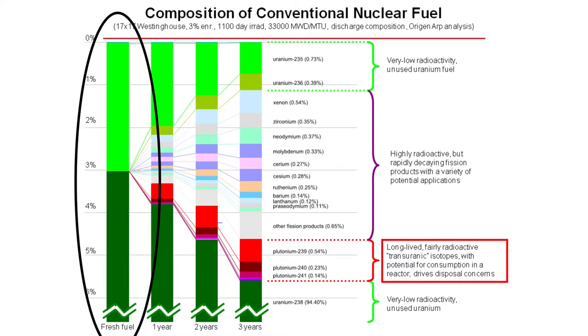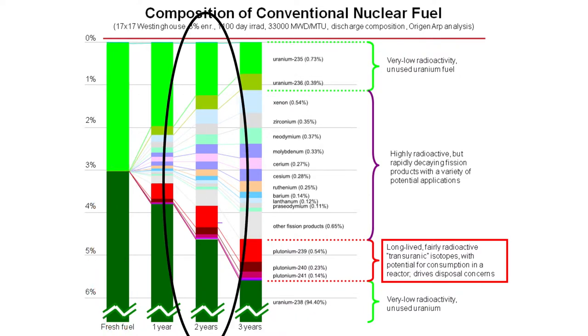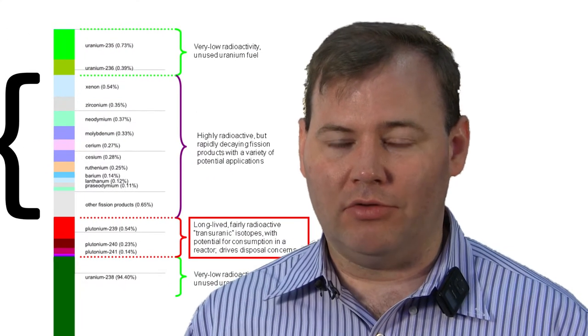When we first load nuclear fuel, it is entirely uranium, and most of that is uranium-238. As it burns down to the year, two years, and then three years, you see those are the fission products and then these transuranics. The hatch at the bottom gives away the fact that the only fraction that has been truly burned is the fraction you see in those light pastel colors.